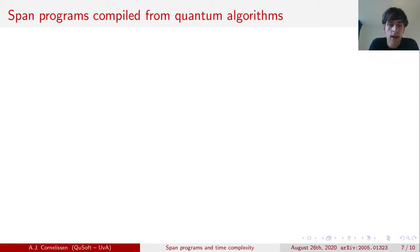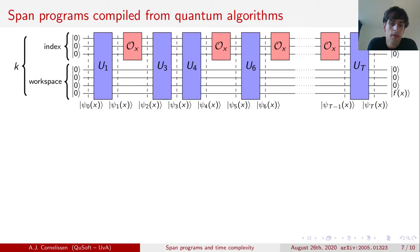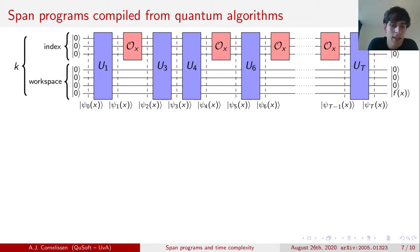Now let's take a closer look at how we can take a quantum algorithm and turn it into a span program. We assume that our quantum algorithm can be chopped up into capital T timesteps, and in each timestep either a query is being performed to the input — represented by the oracle O_x — or an input-independent operation is applied. We also assume that the algorithm starts out in the all-zeros state, and that it computes the function value f in the last qubit while setting all other qubits back to 0. We denote the state throughout the execution as psi_0(x), psi_1(x), psi_2(x), and so on.